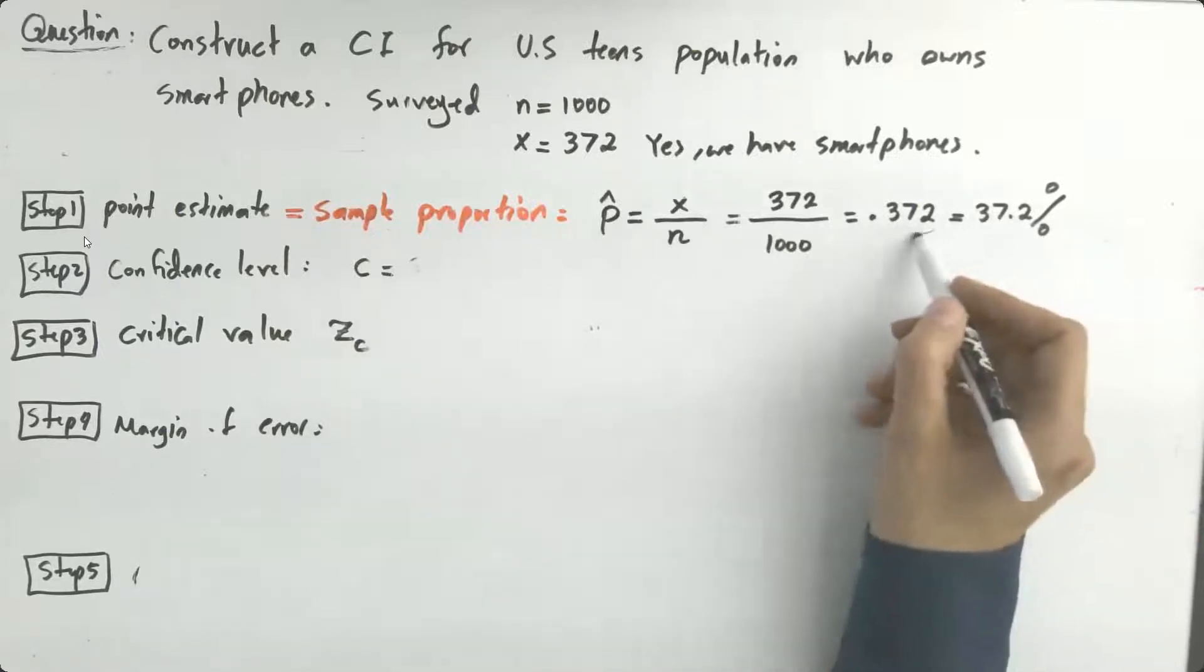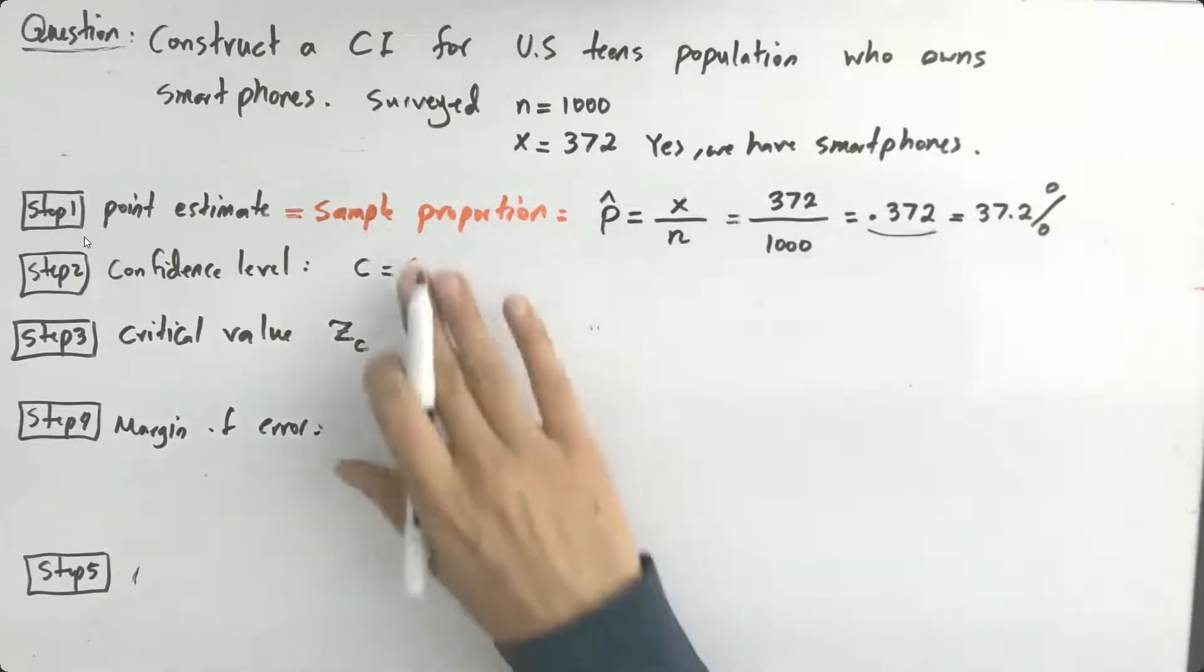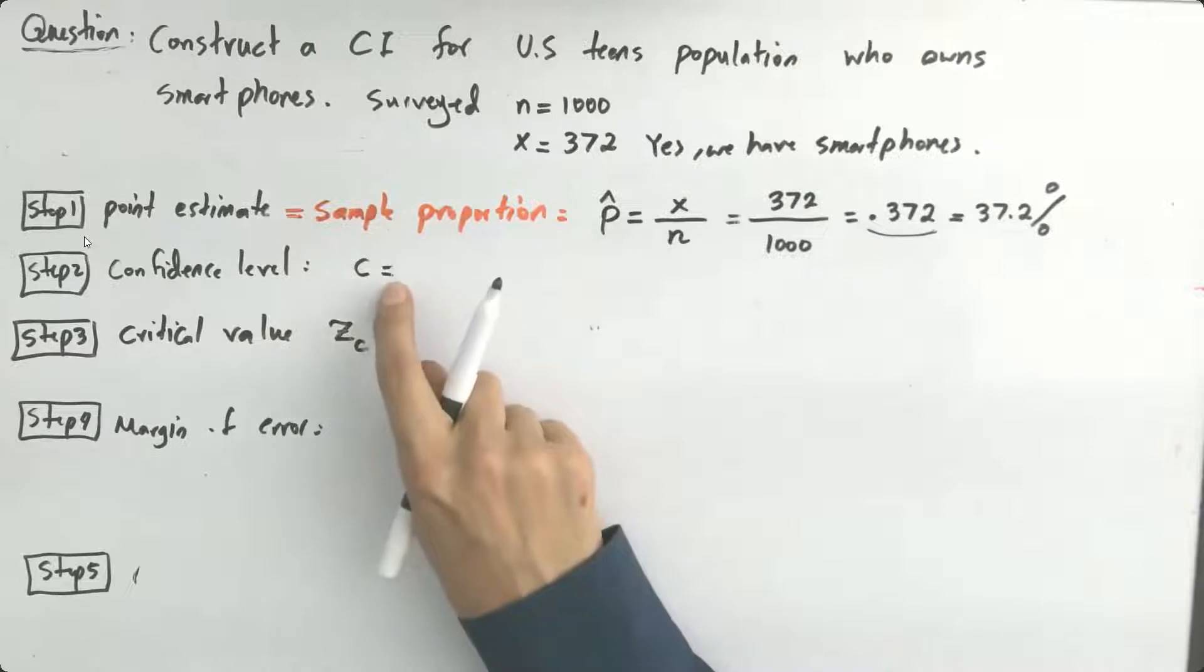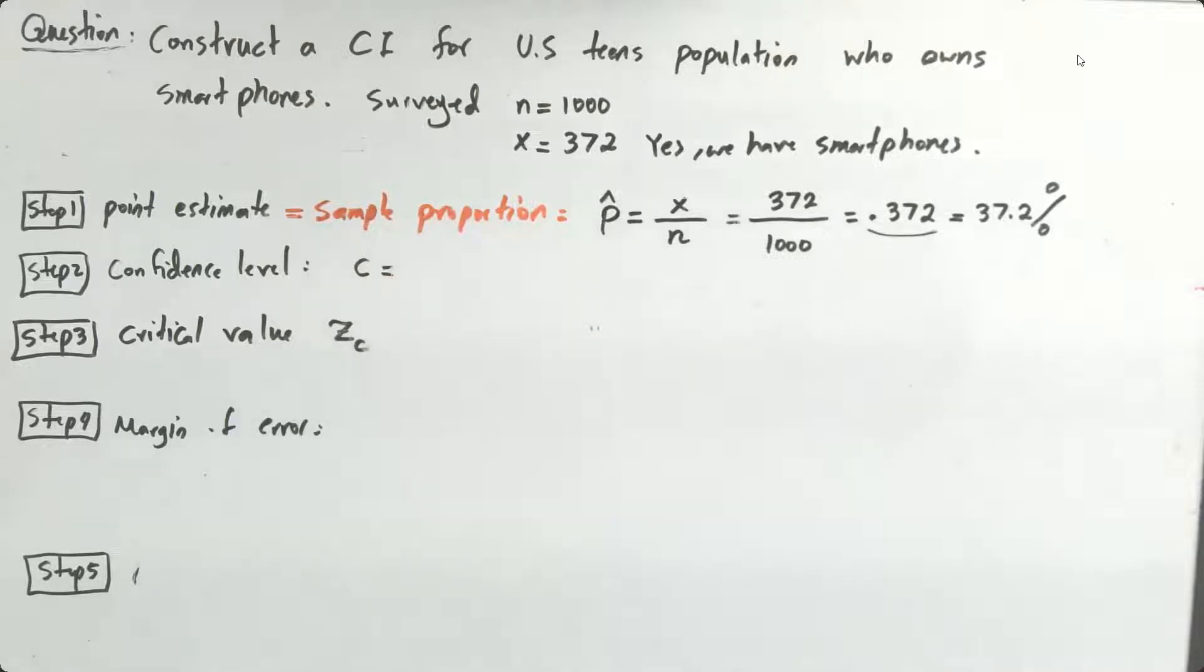you're going to use the decimal form. Well what is the confidence level? Do we have any information about confidence level? Do you know what confidence level is? Any idea about that? If it's not given, what should I use? What is the